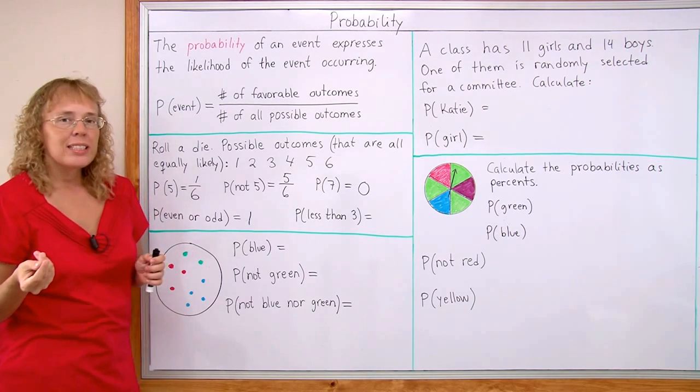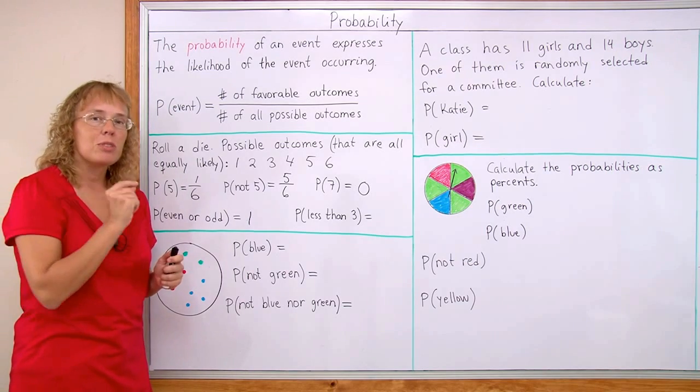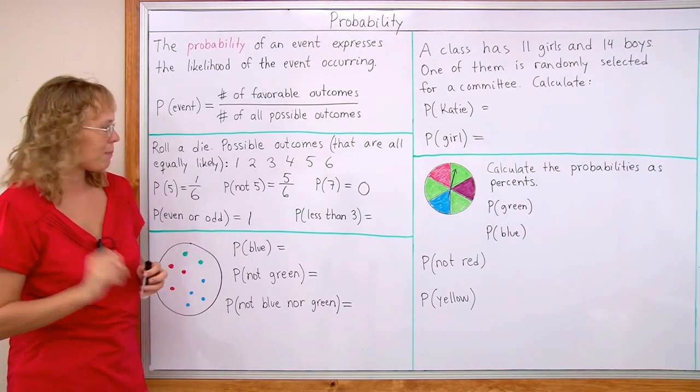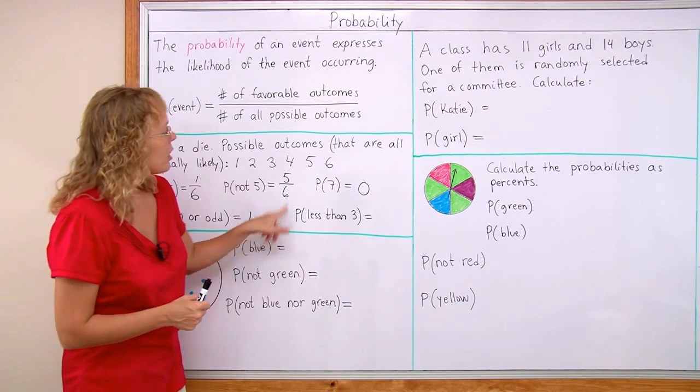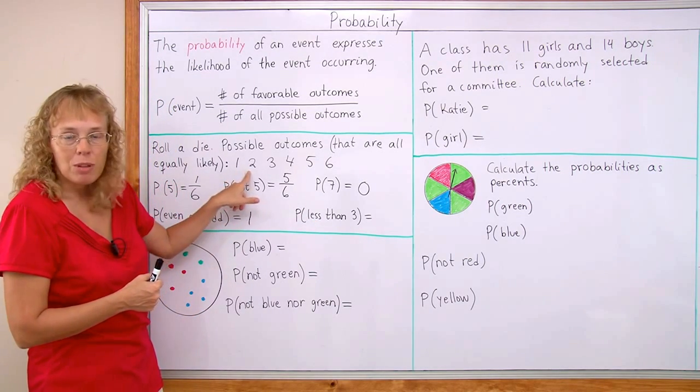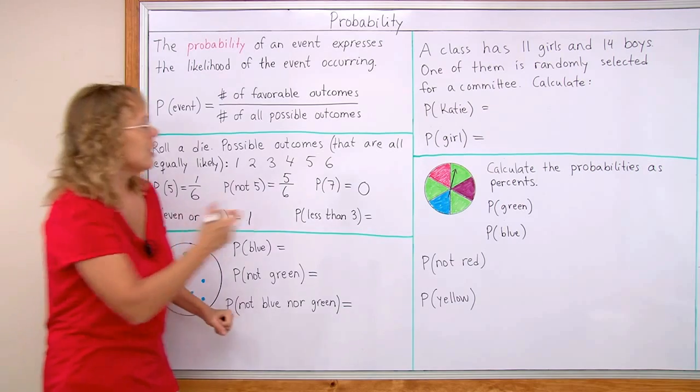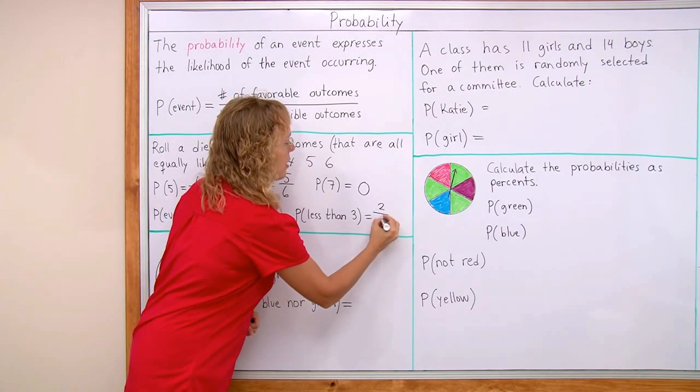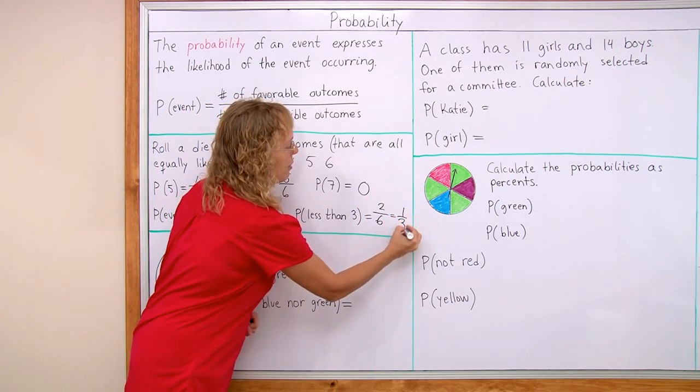Or if you express it as percents, then it would be from zero percent to hundred percent. The probability of getting a number that's less than three, okay? There's two favorable outcomes, these two. And six in total. So we get two sixths or one third if you simplify it.